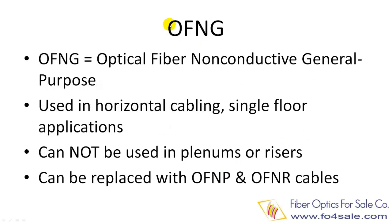The next level is called OFNG cables, where G stands for general purpose. OFNG cables are used for general purpose areas, such as horizontal cabling and single floor applications. OFNG cannot be used in plenum or riser areas, but OFNP and OFNR cables can be used as a substitute for OFNG cables. In most cases, installers use OFNR riser rated cables for all non-plenum areas, because the cost difference between OFNR and OFNG is so little that it doesn't make sense to use OFNG cables at all.